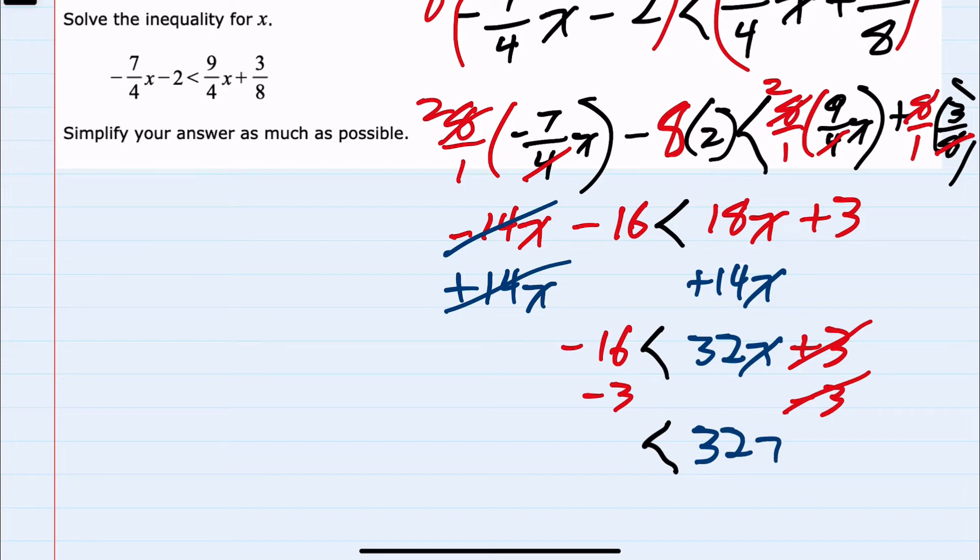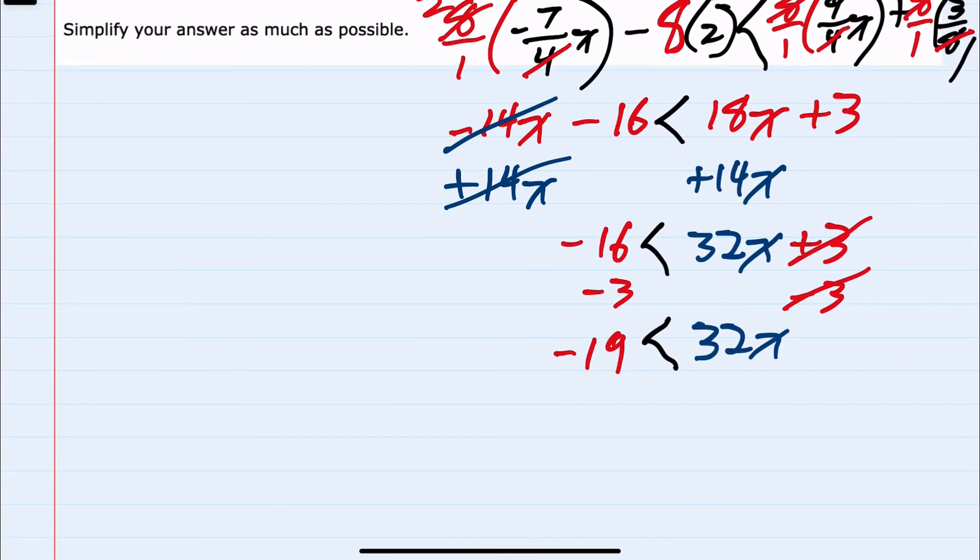So my 32x is still on the right. I now have a negative 19 on the left. And then lastly, to completely isolate the x, I can divide both sides by 32.